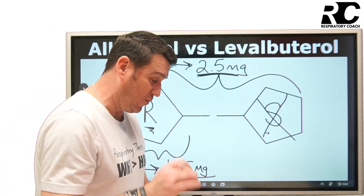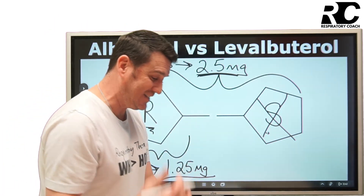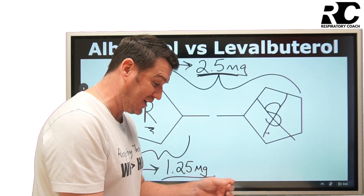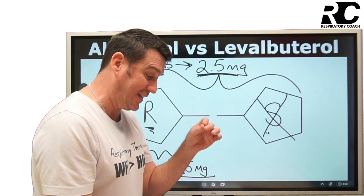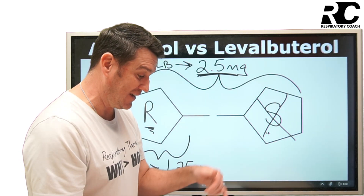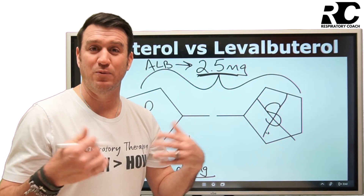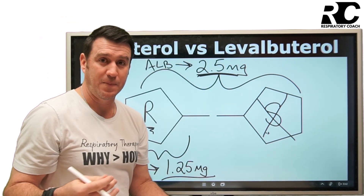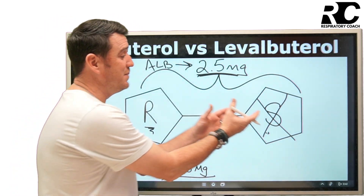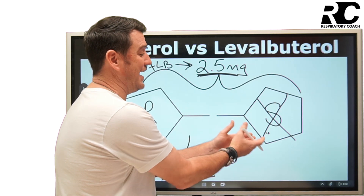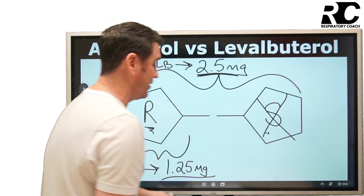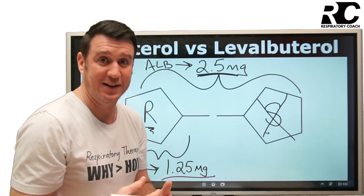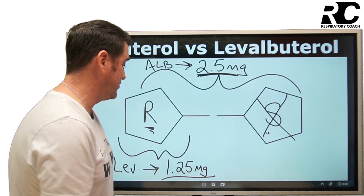With 1.25 milligrams of levalbuterol, we see similar side effects, but we do see a higher peak effect on forced expiratory volume in one second (FEV1) with an eight-hour duration compared with racemic albuterol. When we say racemic albuterol, we're talking about the standard formulation with both isomers. When we remove the antagonizing effects of the S isomer, we get the pure R isomer with greater effects and longer duration.